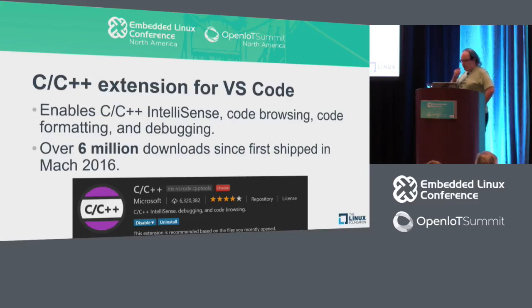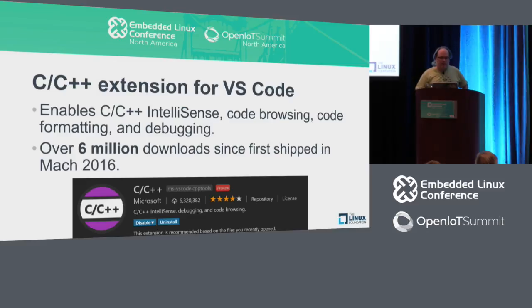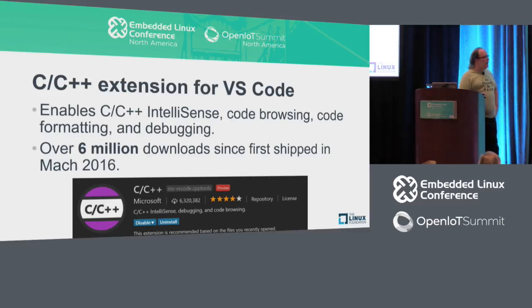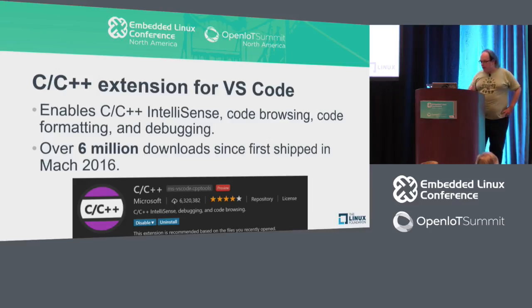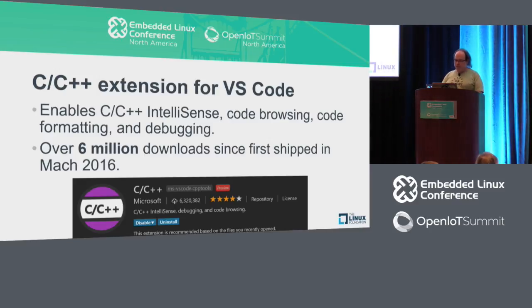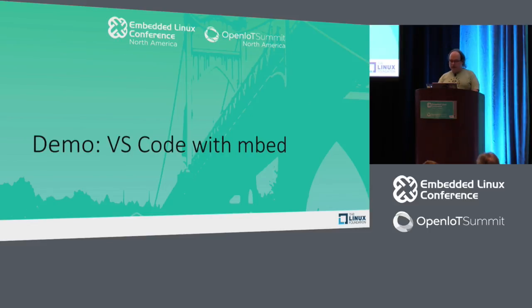Let's talk about the C++ extension for VS Code. It enables basic C++ IntelliSense, code browsing, code formatting, and debugging. It's had about six million downloads since it was first released in March of 2016, so it's pretty popular. And one of the things you can do with it is it actually supports embedded development. So let's take a quick look at that.